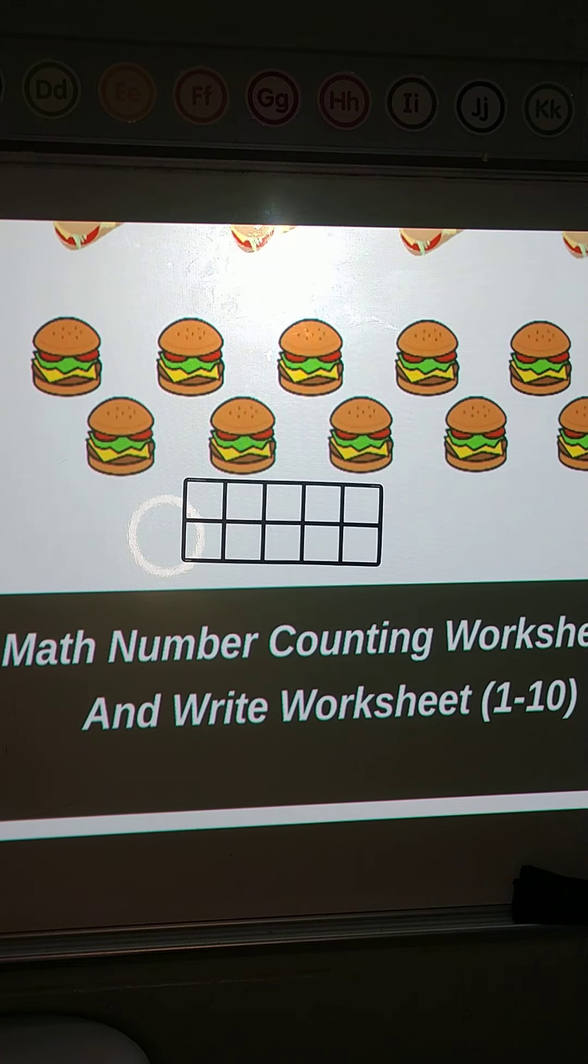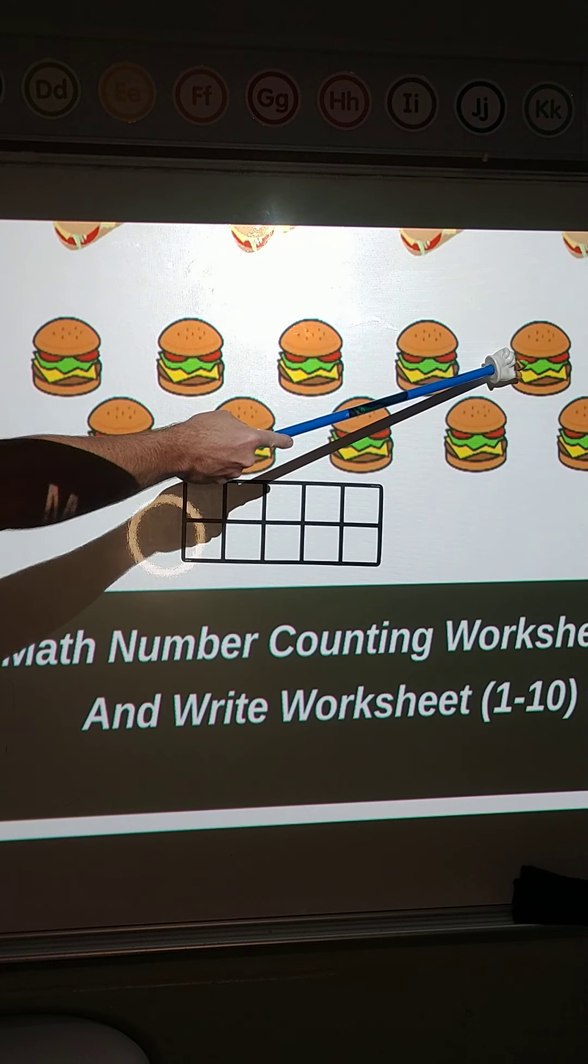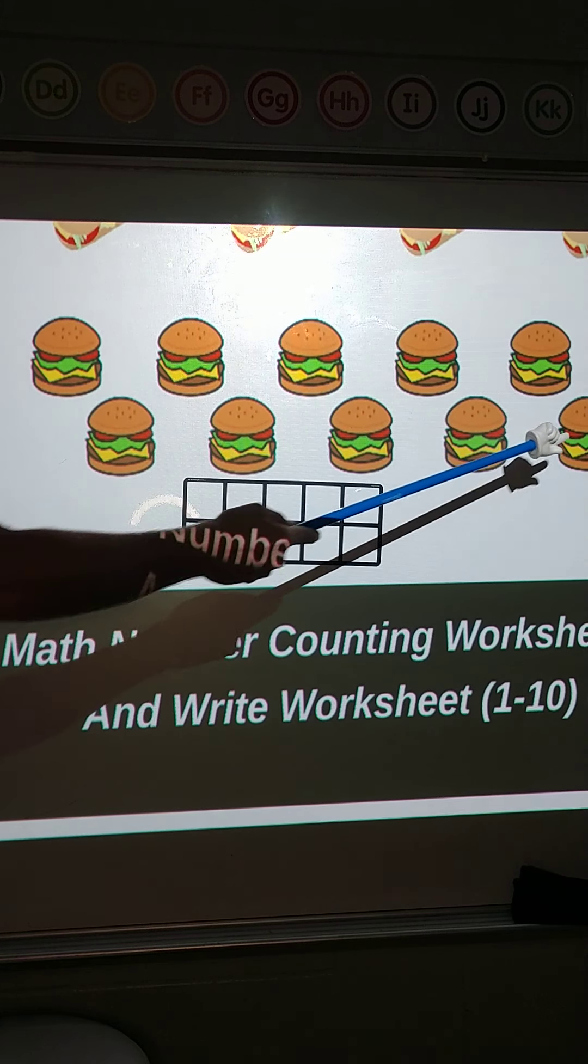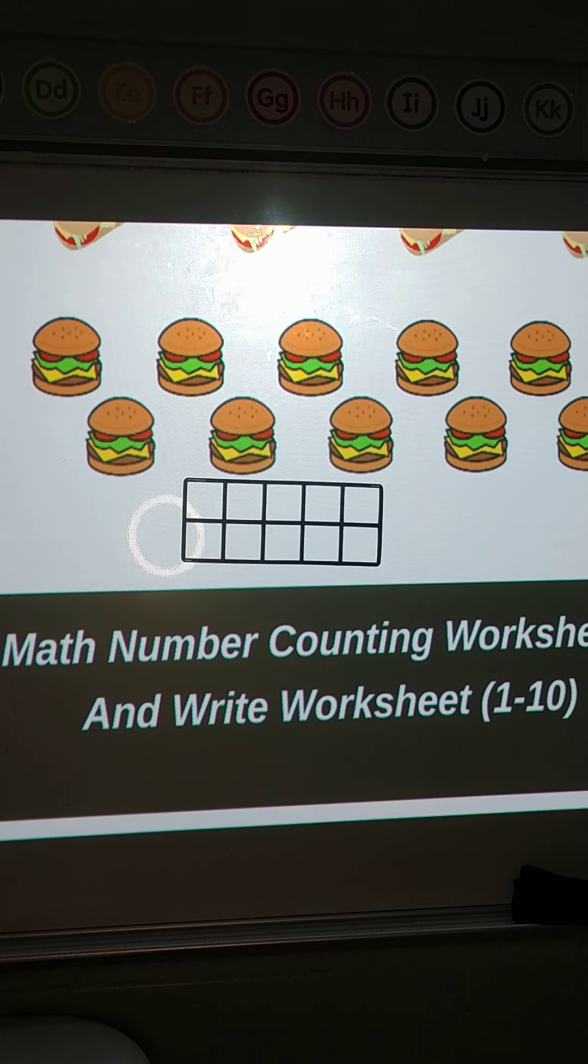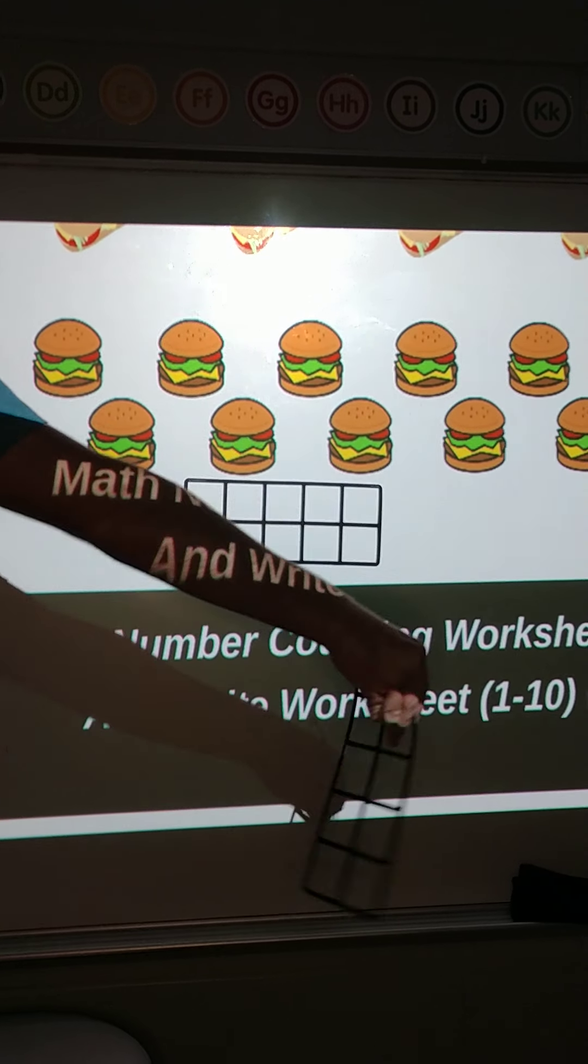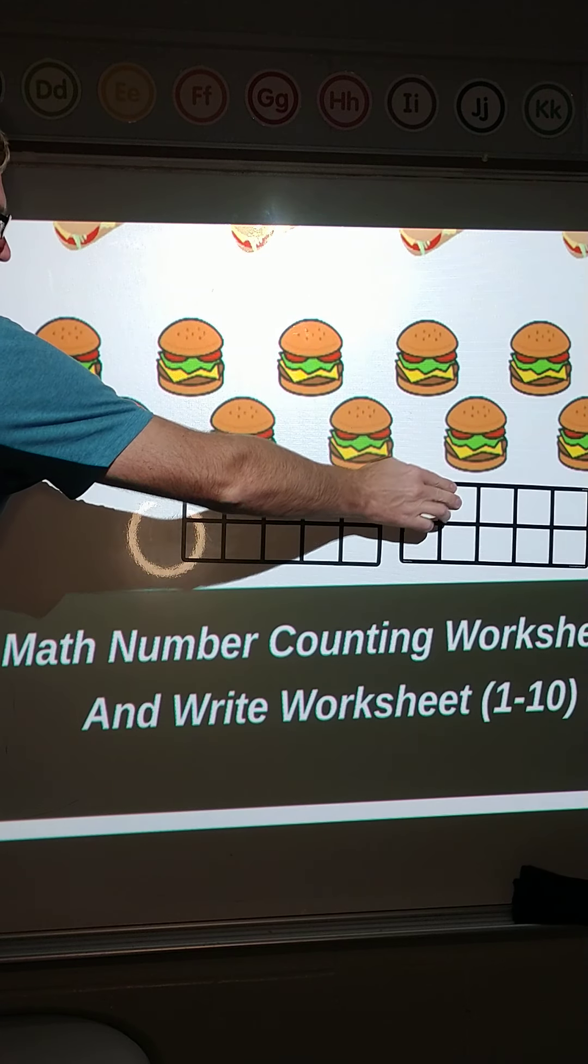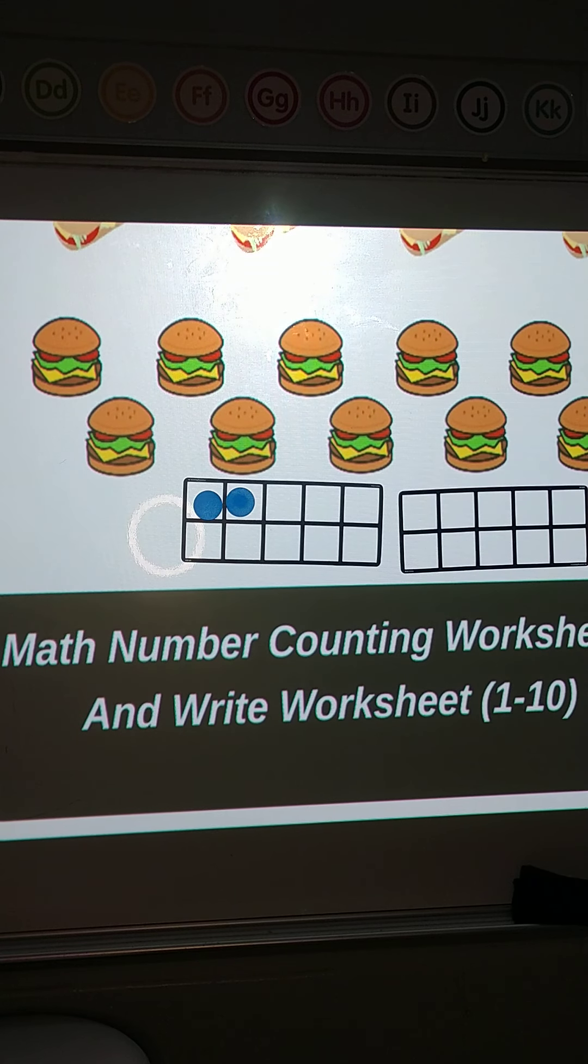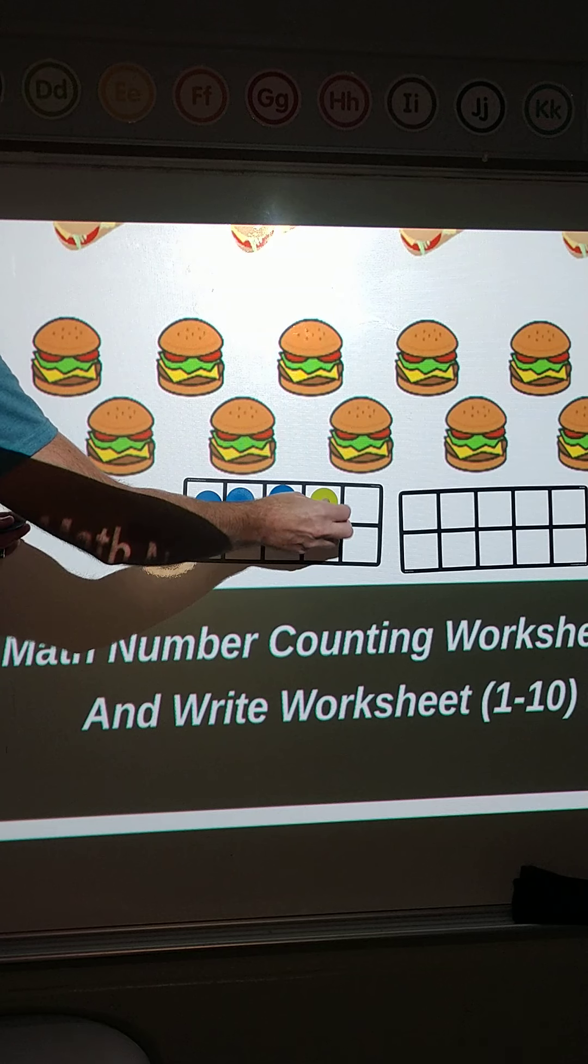Okay, let's count the hamburgers together: one, two, three, four, five, six, seven, eight, nine, ten, eleven, twelve. I'm going to need the second 10-frame because there's only 10 boxes in this first one, so I'm going to need a second one right there.